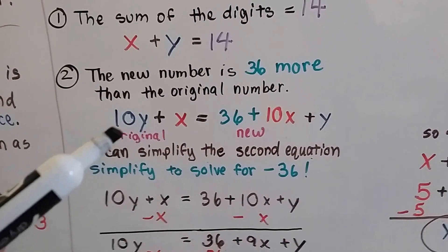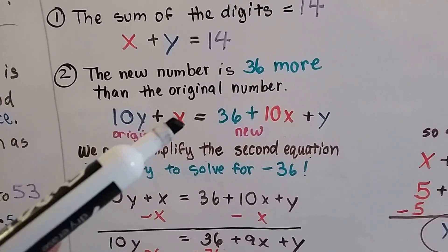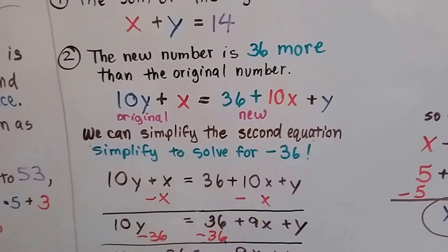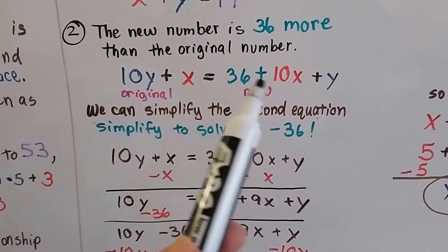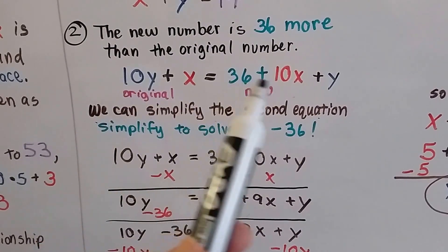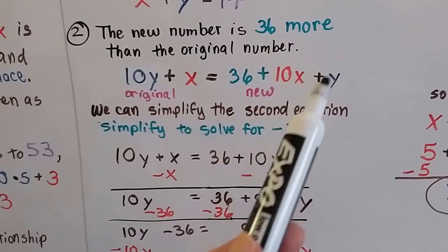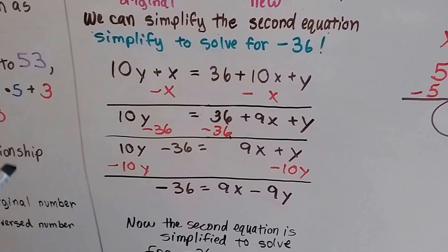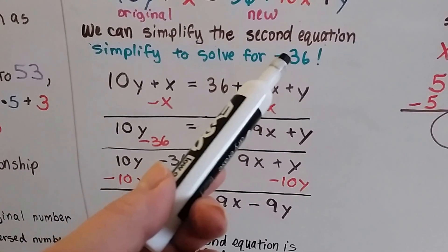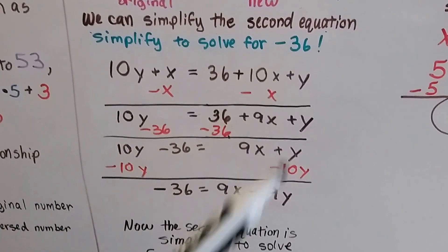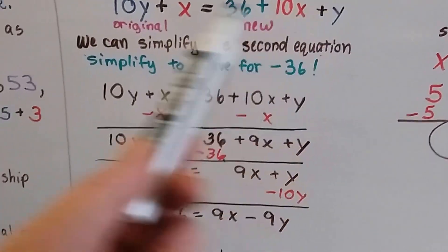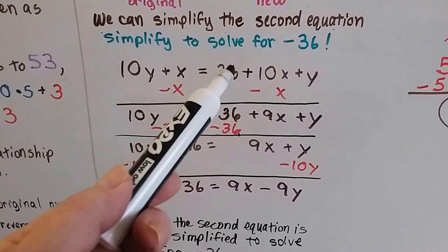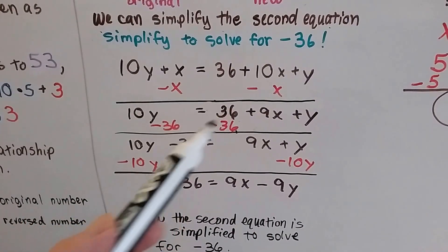So our equation is going to be 10y plus x equals 36 plus 10x plus y. Notice that the 10 is with the y, and now the 10 is with the x on this side. We're taking the original 10x plus y and adding 36 to it to get the new number. We can simplify the second equation by solving for negative 36. So we need to take this equation and make it so that it equals negative 36. Since it's a positive 36, we need to subtract it from each side to get a negative 36.